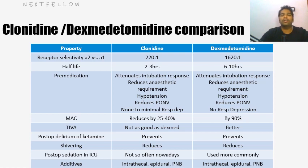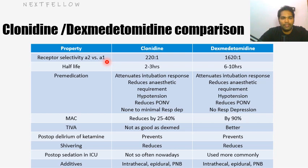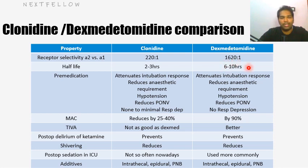Now let's see the comparison between dexmedetomidine and clonidine. Receptor selectivity: even though both are alpha-2 agonists, they have some alpha-1 activity. For clonidine, the alpha-2 versus alpha-1 ratio is 220:1. For dexmedetomidine, it is much more alpha-2 specific at 2620:1. For half-life: dexmedetomidine is shorter acting at 2 to 3 hours, while clonidine is longer acting at 6 to 10 hours. Dexmedetomidine is therefore more preferable.